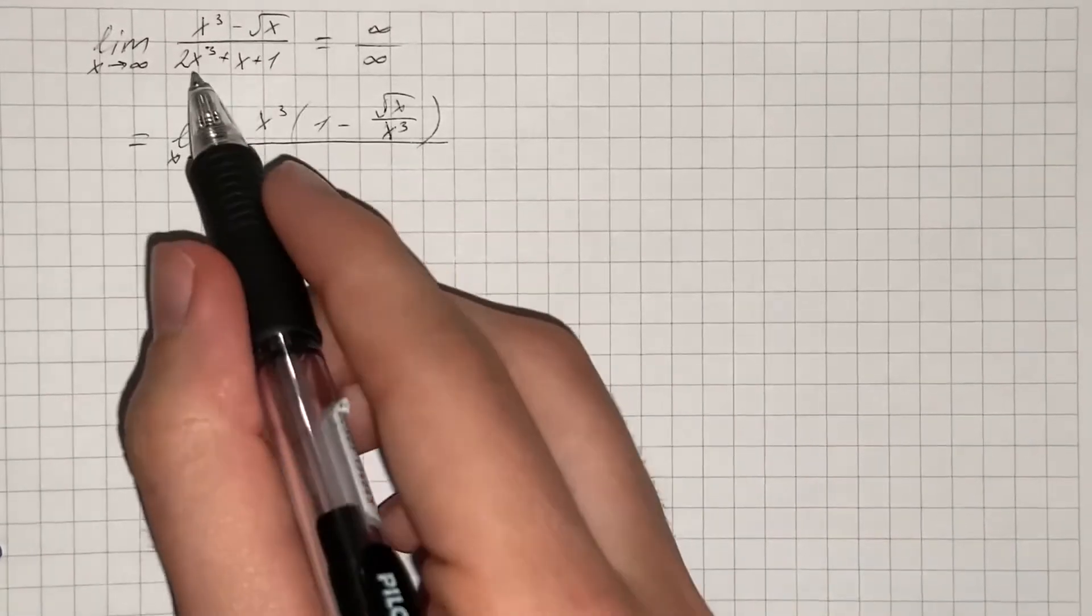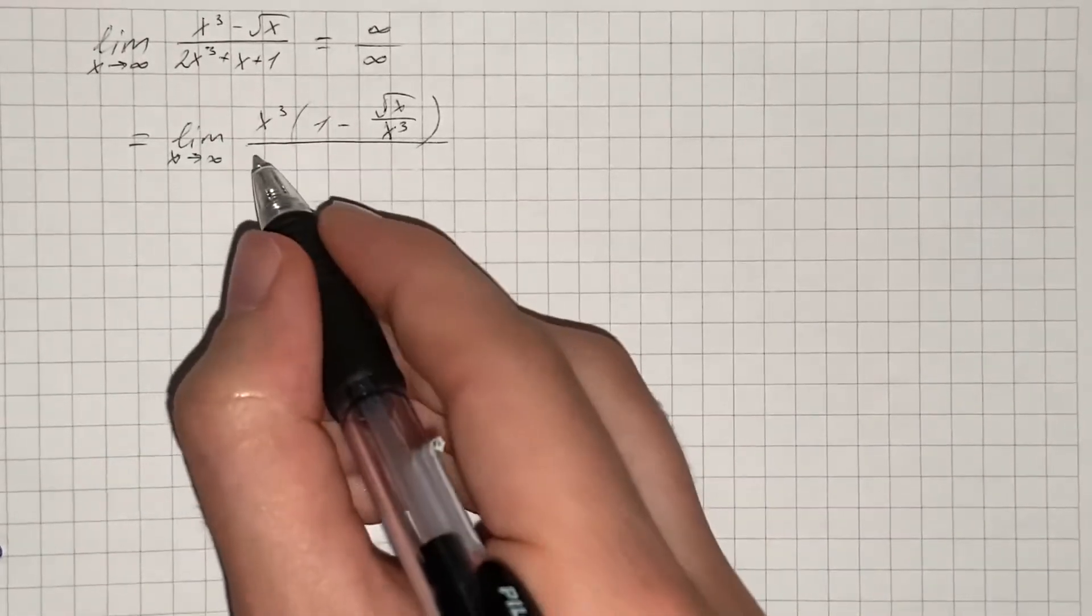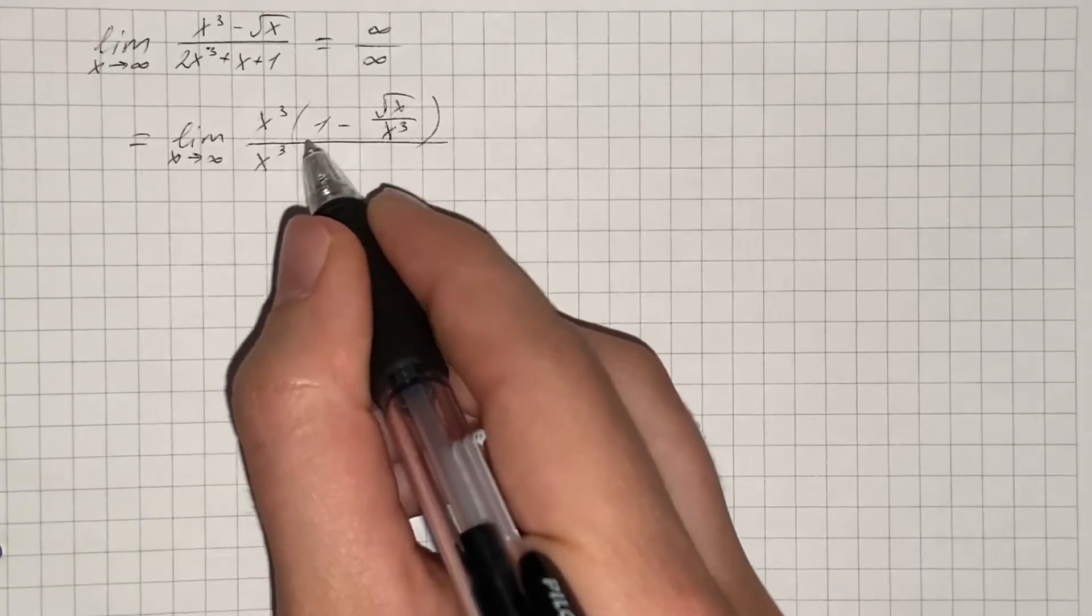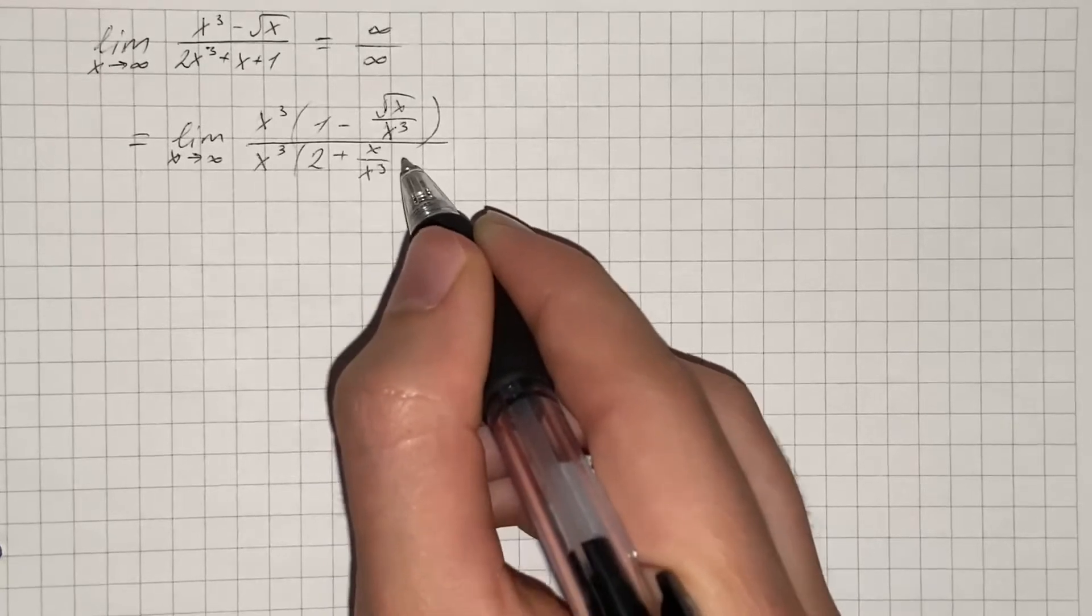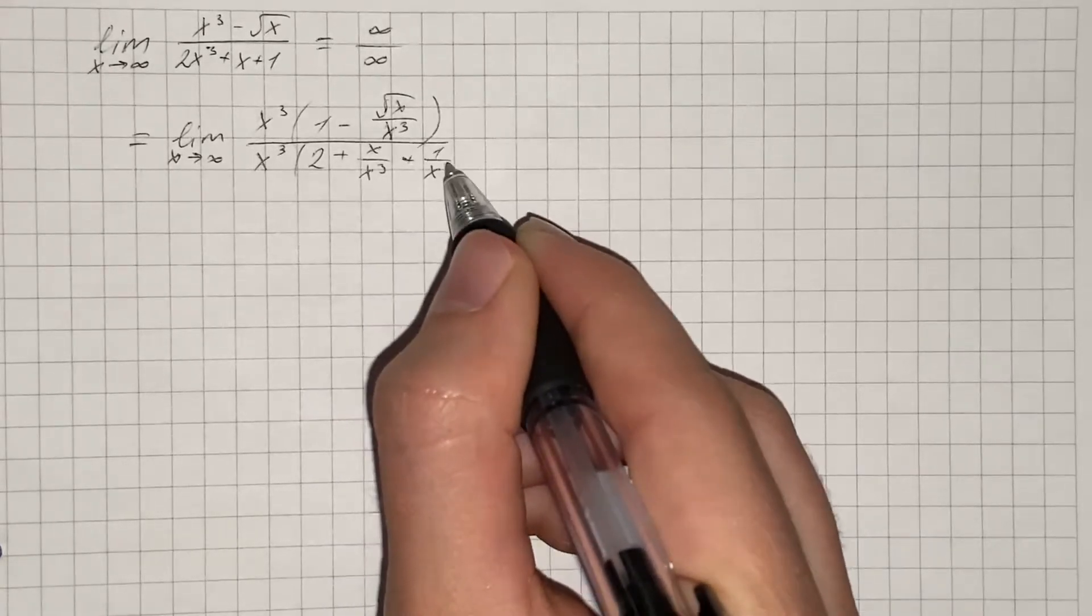And the same we're going to do in the denominator, so that's x cubed times 2 plus x divided by x cubed, and plus 1 divided by x cubed.